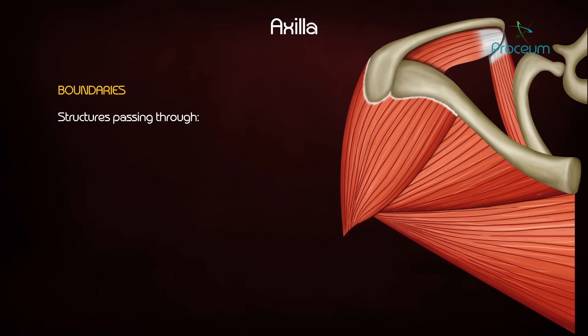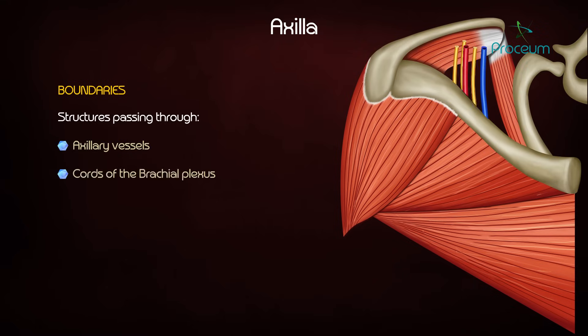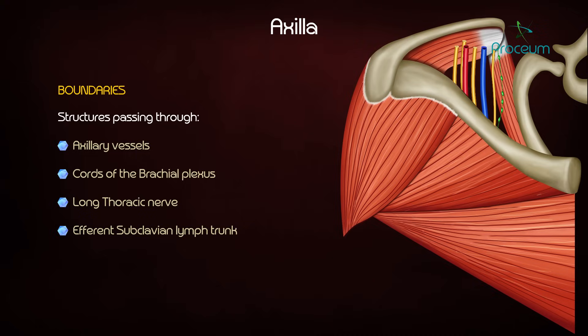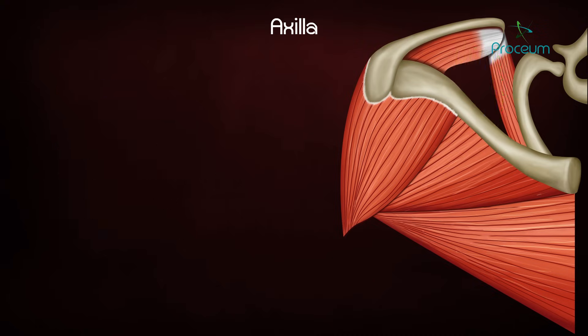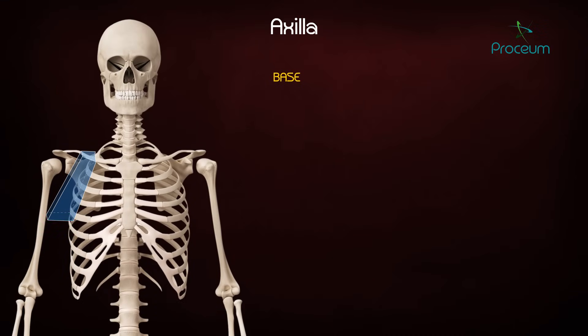Structures passing through the apex are: axillary vessels, cords of the brachial plexus, long thoracic nerve, and efferent subclavian lymph trunk.